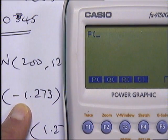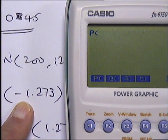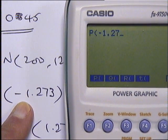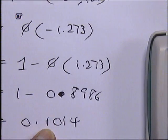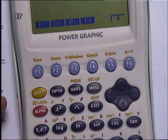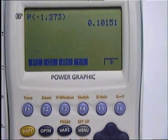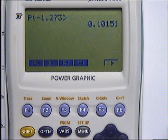Then I'm going to type in my minus 1.273 and close bracket and execute. The answer I'm hoping to get for that question is 0.1014. I press execute, I get 0.10151. The calculator is probably a bit more accurate than the tables, so that's basically the same number.